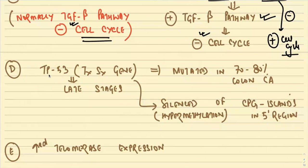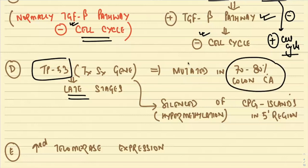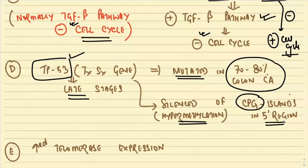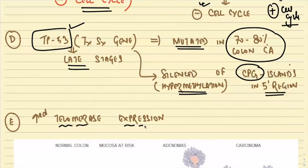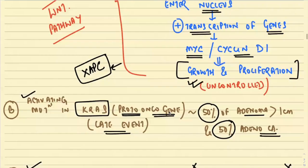Ultimately, there is a mutation in the very important tumor suppressor gene TP53, which occurs in the very late stages and is found in 70–80% of colorectal carcinomas. Inactivation of TP53 can occur via mutation or via epigenetic method — hypermethylation of CpG islands in the 5-prime region. Lastly, there might be increased telomerase expression, which maintains the chromosomal telomeres and increases the lifespan of the cell, promoting increased survival.